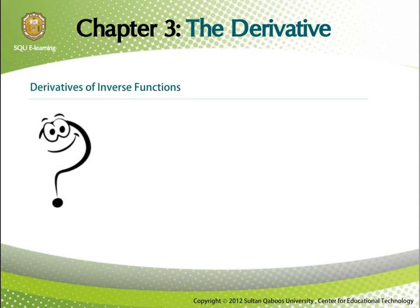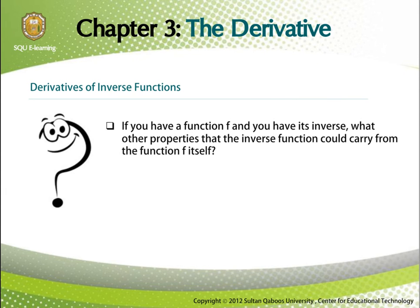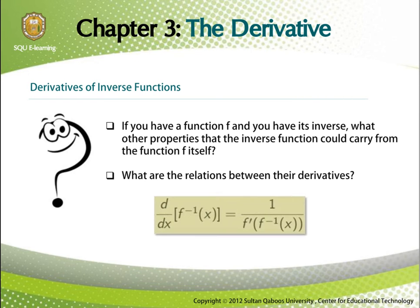There's two extra topics in this chapter, which is talking about derivative of inverse function. If you have a function f, and you have its inverse, what other properties that the inverse function could carry from the function f itself? And most importantly, what is the relation between their derivatives? Well, the relation between the two derivatives is d over dx of f inverse of x is equal to 1 over f prime of f inverse at the same point x.